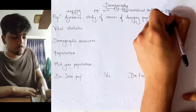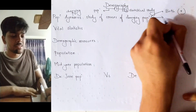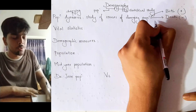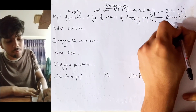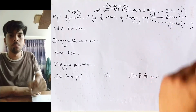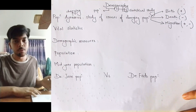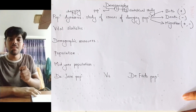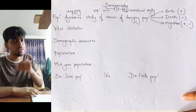First, birth. Birth adds to population. Second, death. Death decreases the population of a place. And third, migration. Migration adds as well as decreases the population. For example, if you are staying in place A and you migrate from place A to place B, then the population of place A decreases but the population of place B increases.